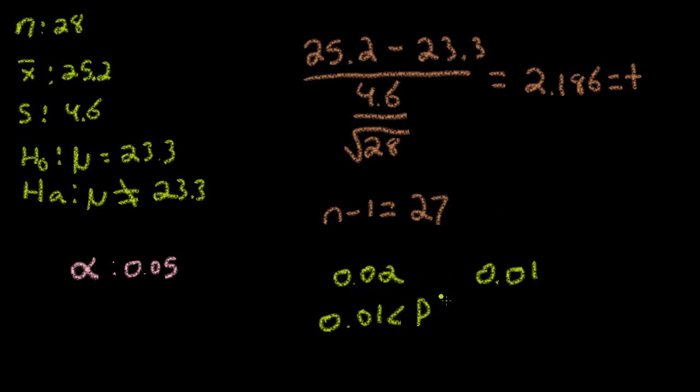So the probability of the t value with a degree of freedom of 27 being greater than 2.186, which is also less than 0.02, because that would be the greatest in our range here.